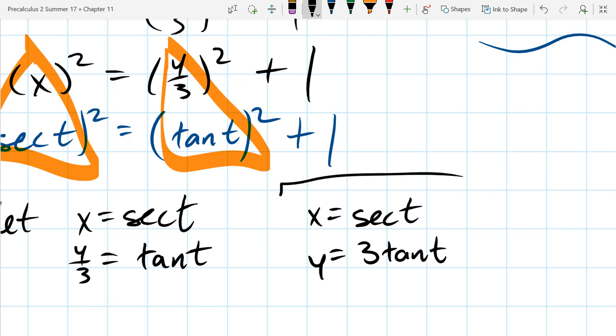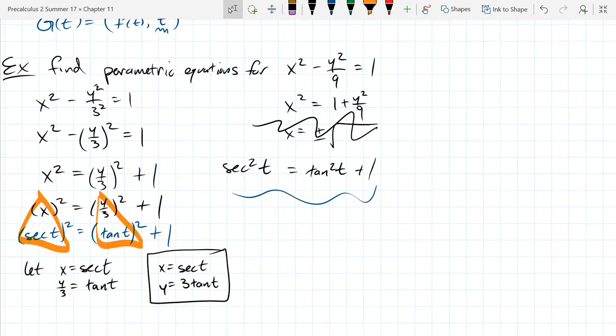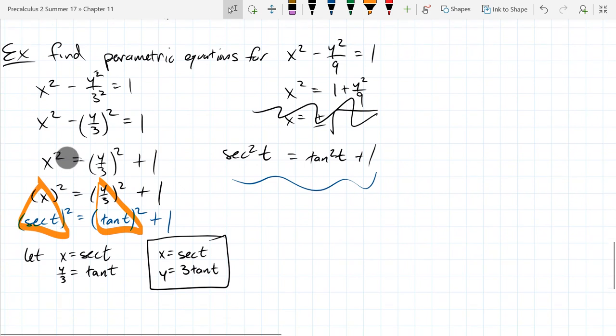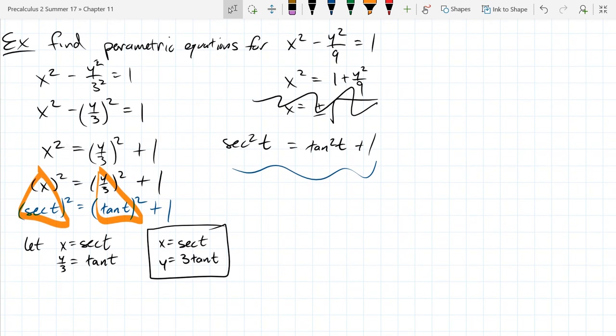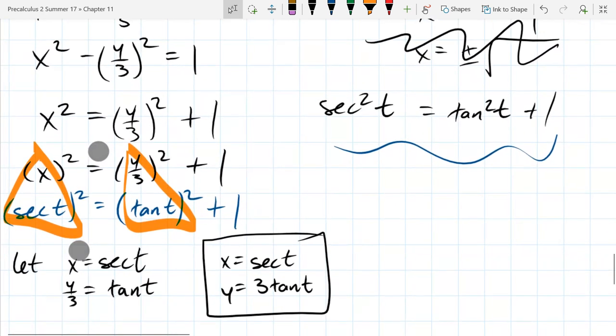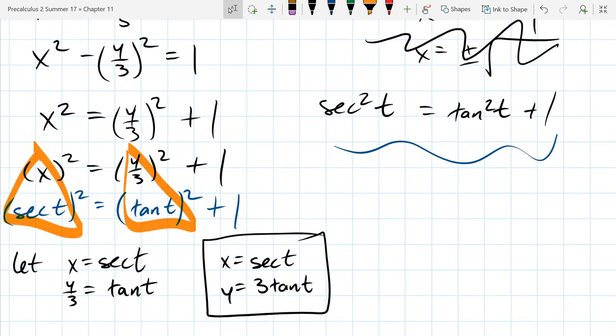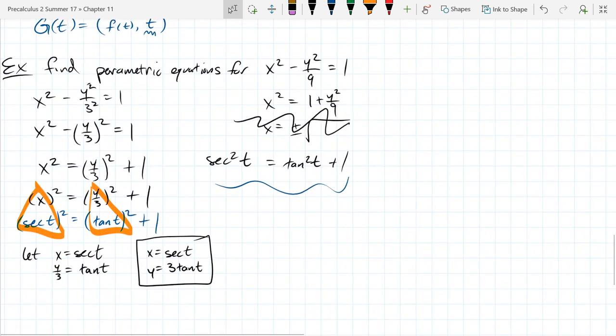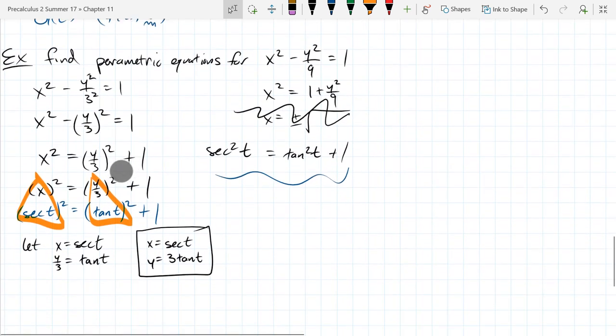So these are our parametric equations now. Generally, when I ask you to convert, I won't ask you explicitly what t values work here. Obviously, secants and tangents, you have to be careful, you can be divided by zero. But I'm not going to go so far into this type of question. So that'll be, you just find the two equations and write them down.